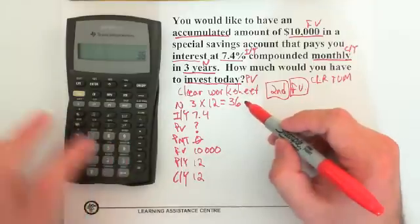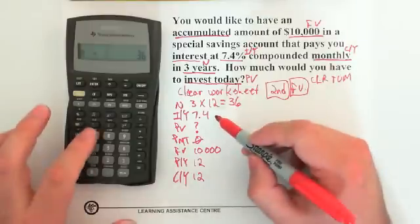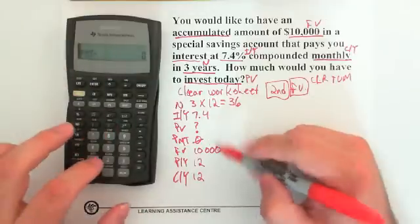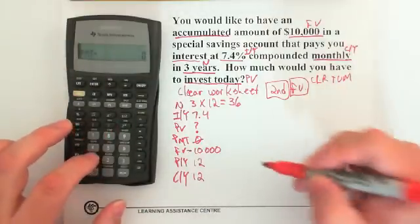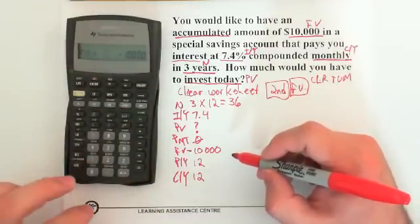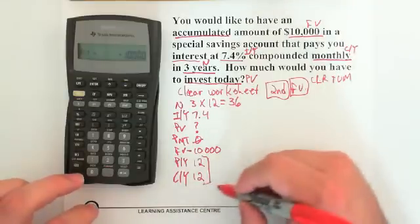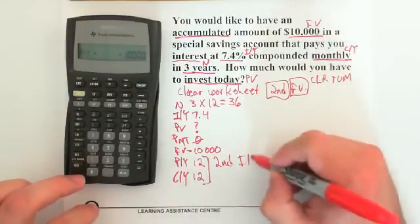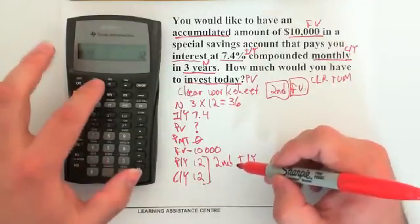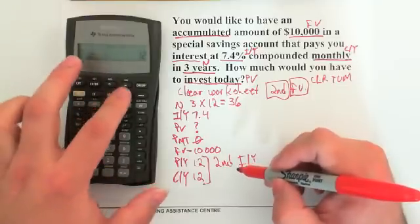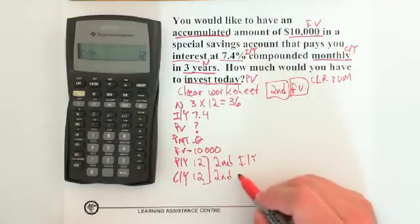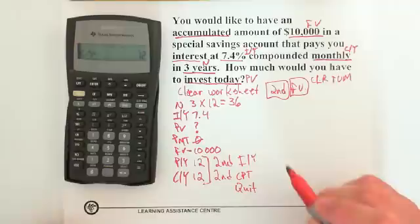Entering the data: type 36 and hit N, then 7.4 and hit IY. Skip PV for now and enter 0 for PMT. Then enter 10,000 — make it negative with the plus/minus button — and hit FV. Now for PY and CY, press second IY. Change PY to 12 and hit Enter. Then press the down arrow to see that CY has also changed to 12. Press second CPT to quit.